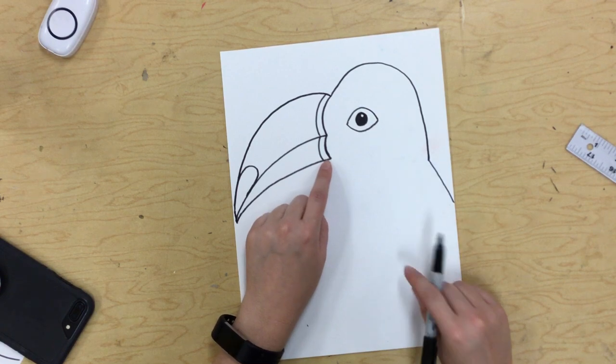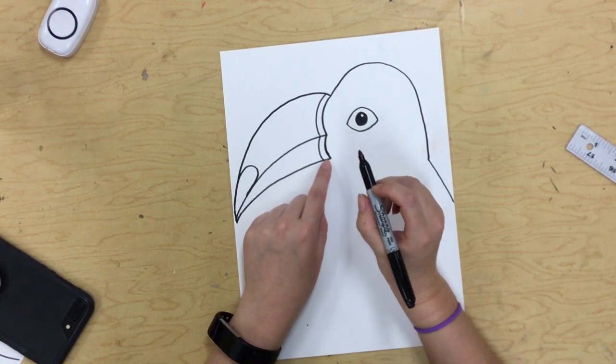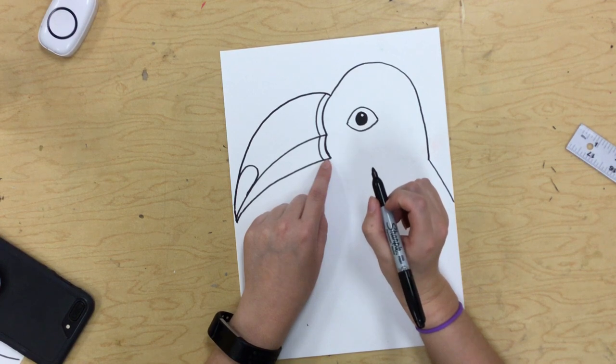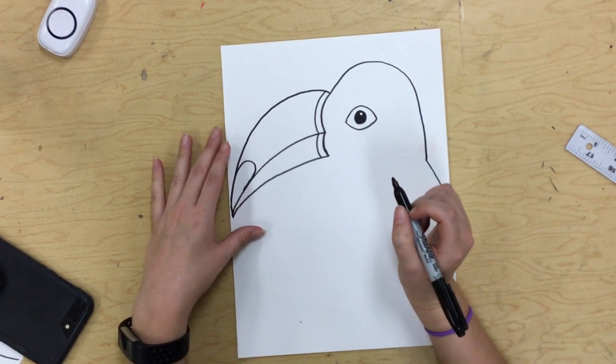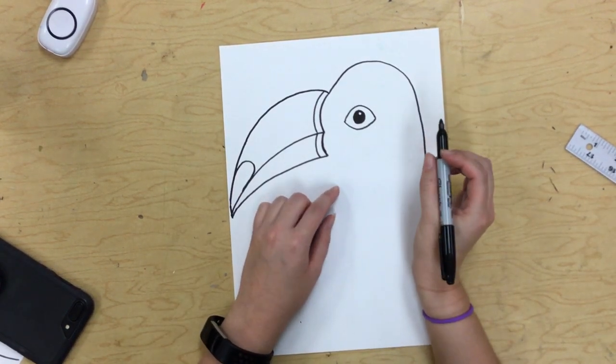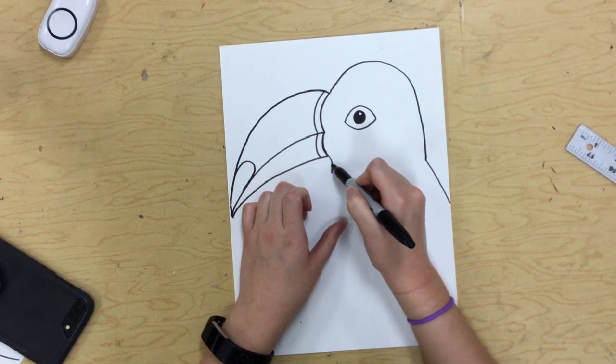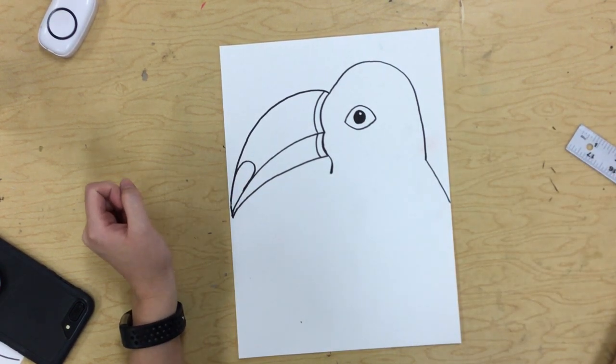Then under his beak on this side, I'll give you a second. Don't worry, it's going to stay up, even if you're behind. Under his beak on this side, I'm going to make just the tiniest little curve that goes in and out like that.